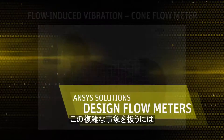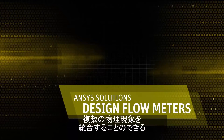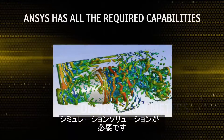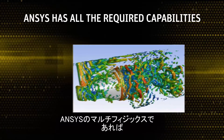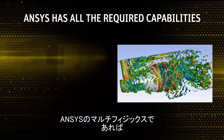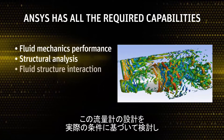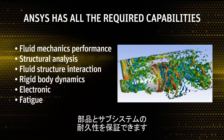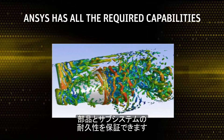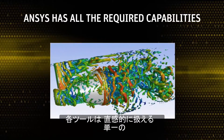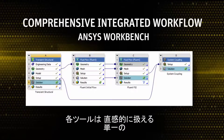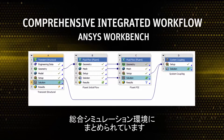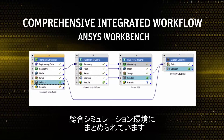This complexity requires a unique simulation solution, one able to integrate multiple physical phenomena. ANSYS Multiphysics is used to investigate the flow meter design under real-life conditions, ensuring durability of the components and subsystems. ANSYS brings these tools together in a single intuitive and comprehensive simulation environment.